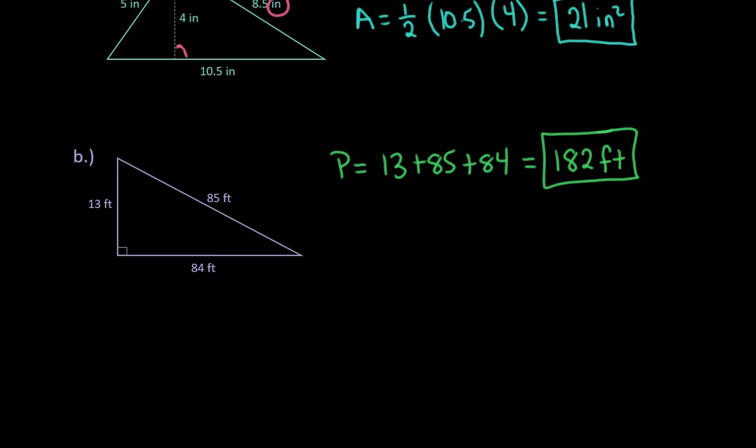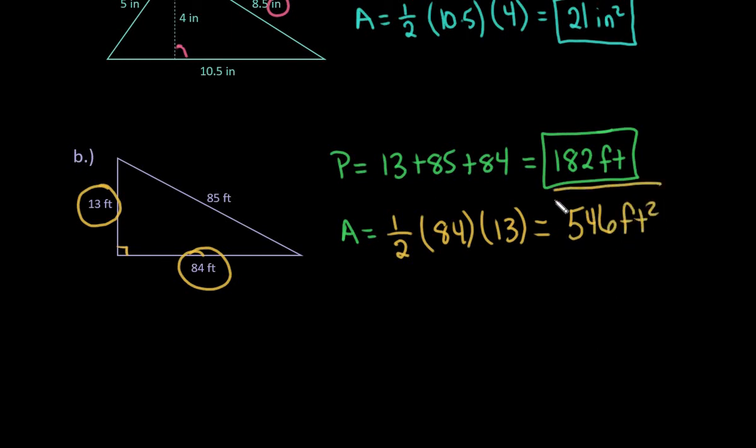And then to find the area, you do want to find the two legs. So, for my area, I'm going to use the two legs as my base and my height because they are perpendicular. So, the height is always perpendicular to the base, so the 85 will not be used in calculating the area. So, I would just do one-half, the base is 84, times the height, which is 13, and if you find the product of these numbers, you do end up with 546 square feet.